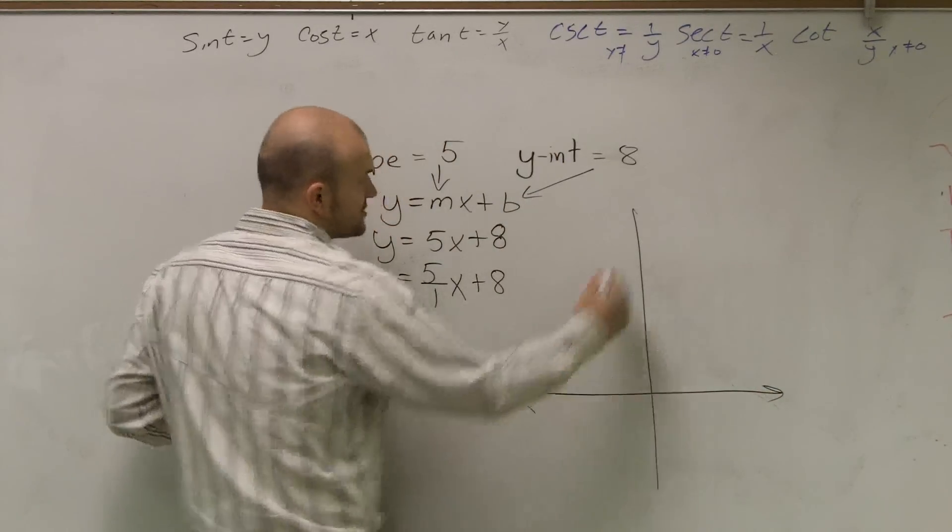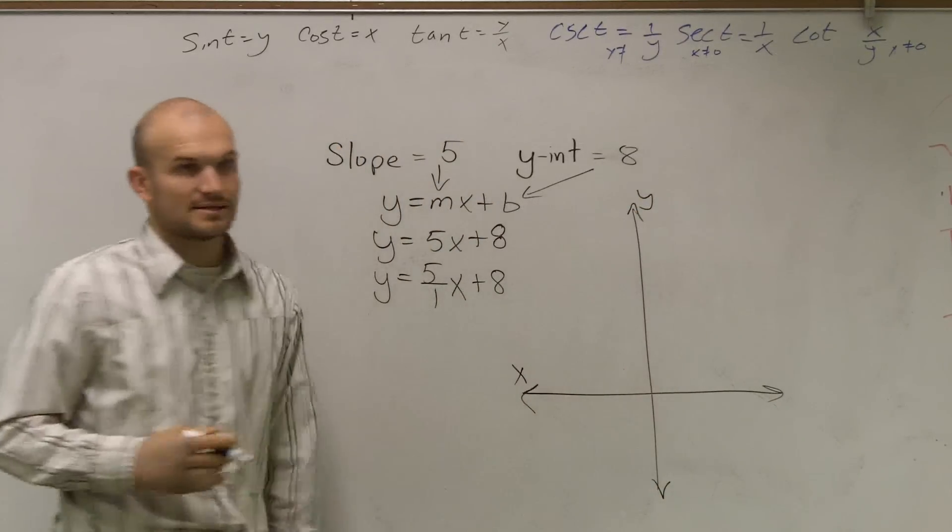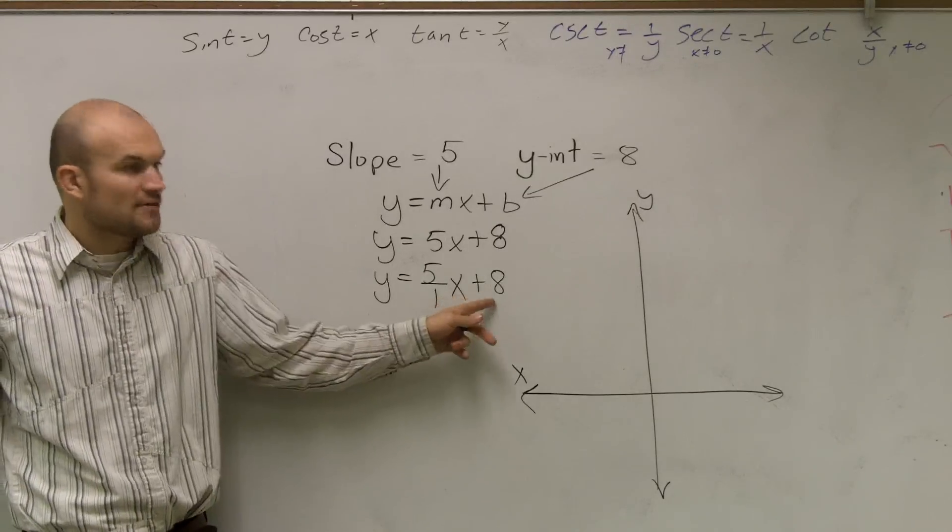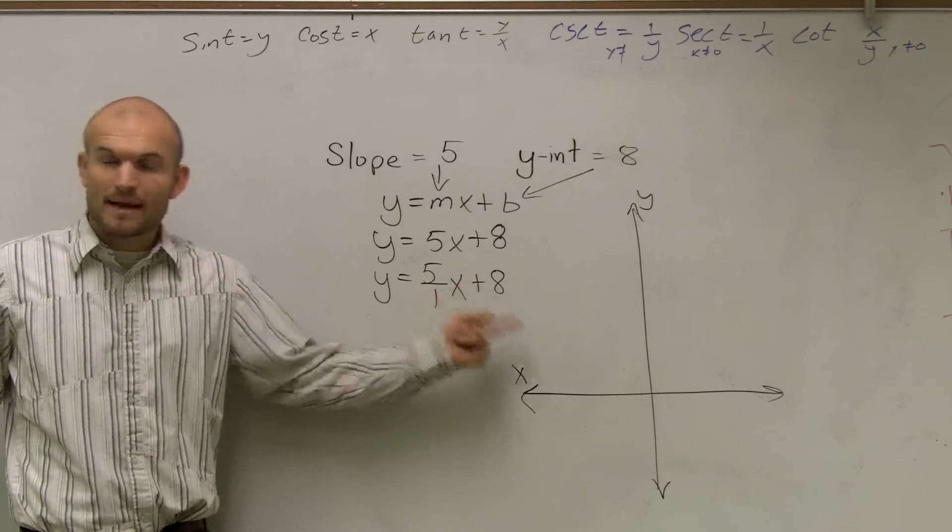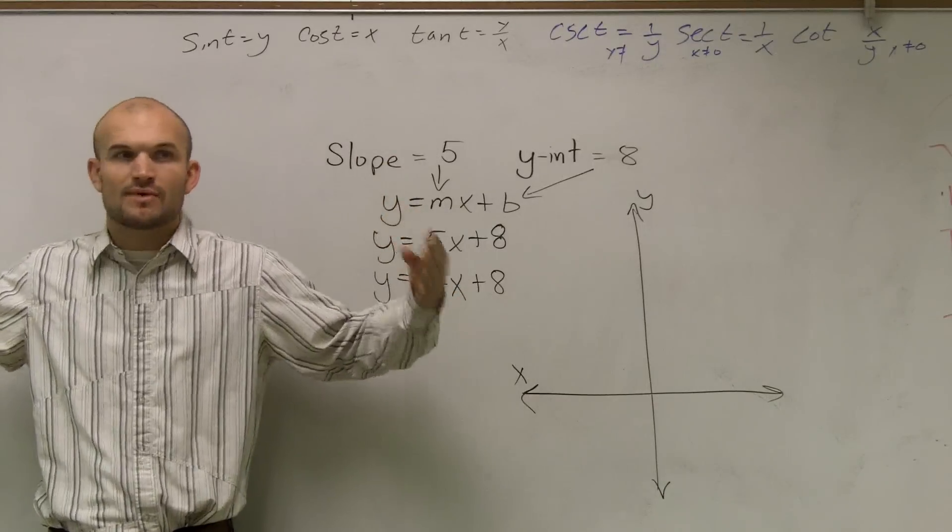So it asks us to graph it. I create a y-axis and I create an x-axis. Once I've created my x and y-axis, first thing I know is my y-intercept. Now remember, when we were given a graph, I said, what was the y-intercept?